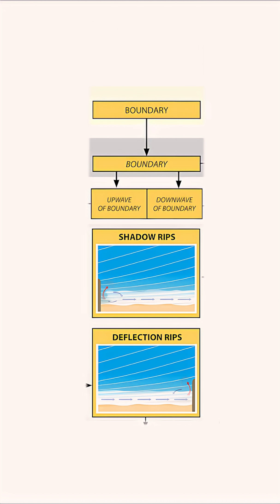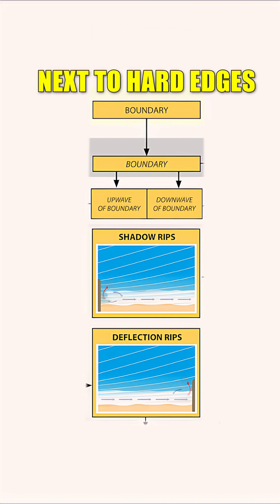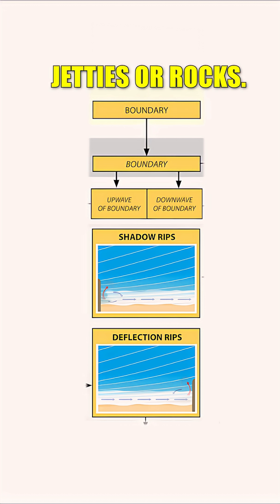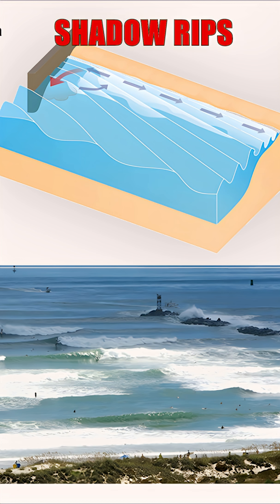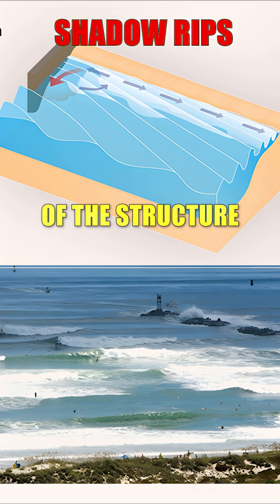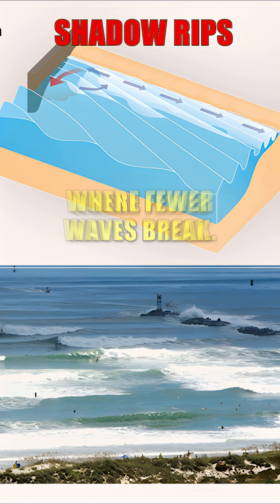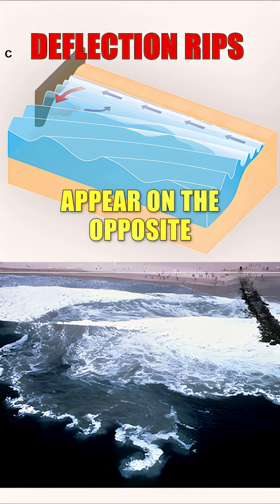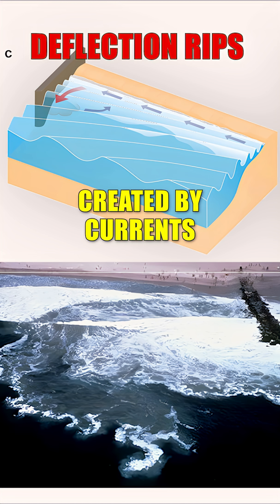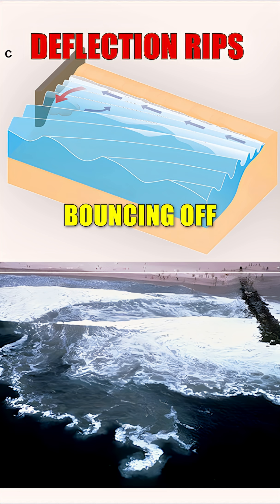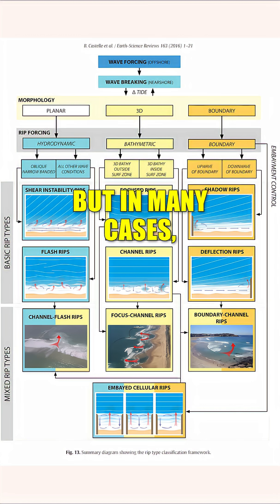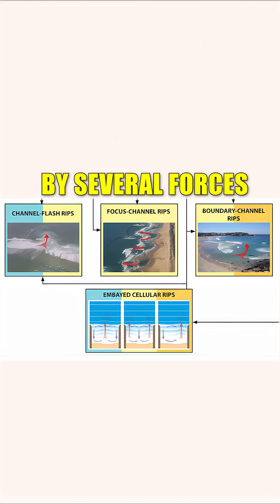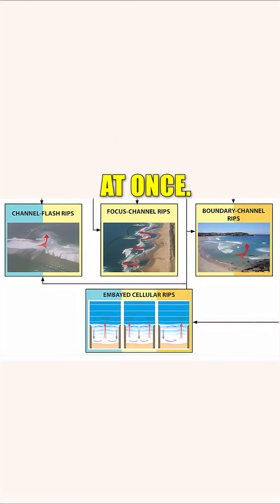Boundary controlled rips form next to hard edges like headlands, jetties, or rocks. Shadow rips happen on the sheltered side of the structure, where fewer waves break. Deflection rips appear on the opposite side, created by currents bouncing off the boundary. In many cases, some rip currents are hybrids, driven by several forces at once.